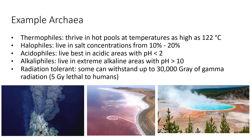Here are a few examples of archaea. Thermophiles — thermal means heat, phile means loving — they thrive in hot pools with temperatures as high as 122 degrees Celsius. Halophiles live in very high salt concentrations of 10 to 20 percent, which would osmotically dehydrate other organisms. Acidophiles thrive in very acidic environments. Alkalophiles thrive in very basic or alkaline environments. Some are radiation-tolerant — they can withstand up to 30,000 grays of gamma radiation, compared to just 5 grays which would be lethal to humans.